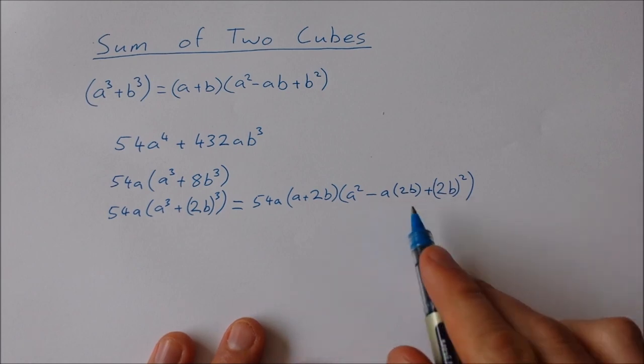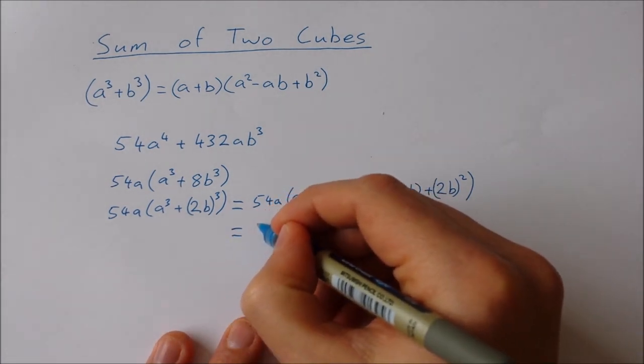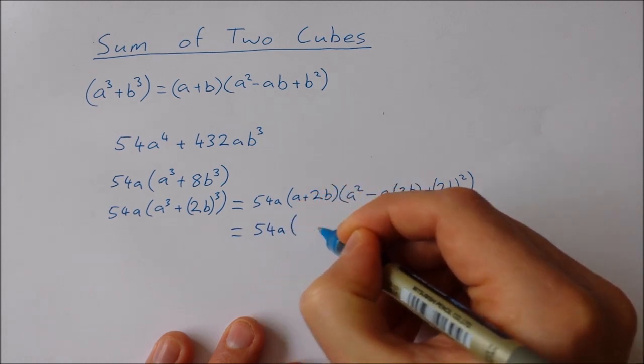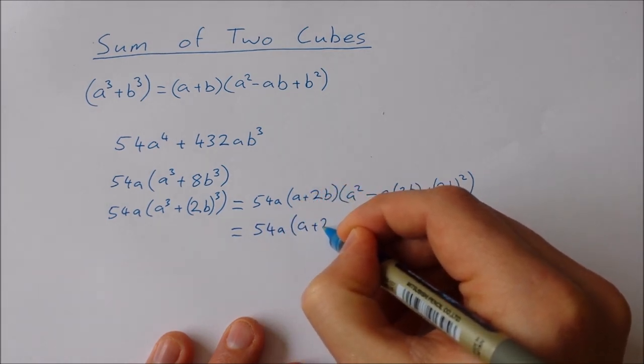Now I'm nearly done, I just need to tidy up inside here. So that's going to give me 54a times (a + 2b).